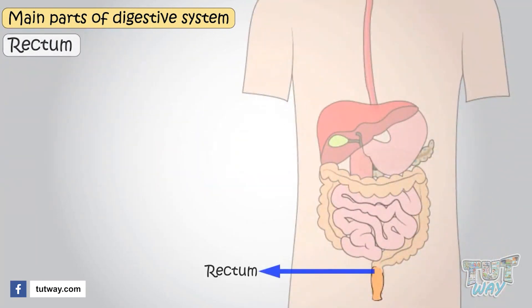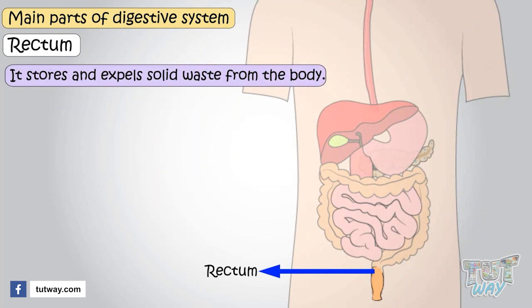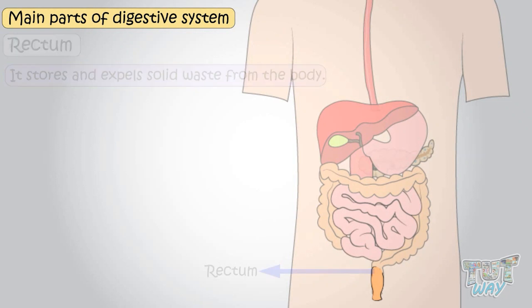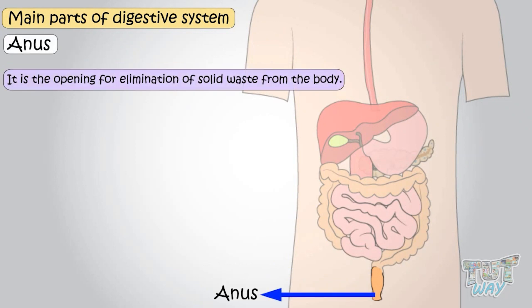Rectum — it stores and expels the solid waste from the body in the form of feces. Anus — it is the opening for the elimination of solid waste from the body.